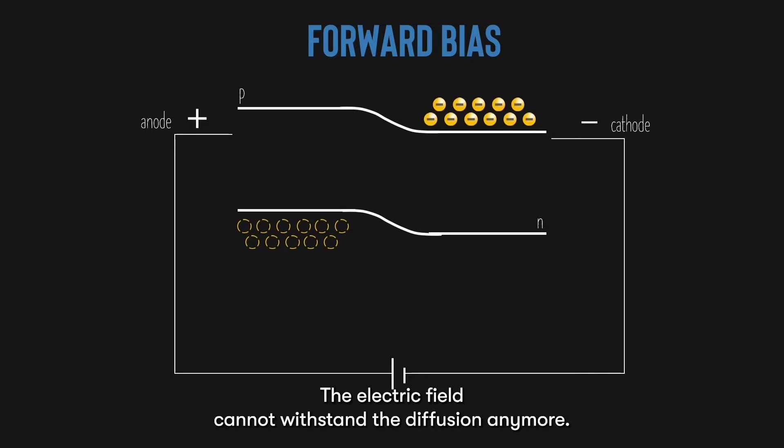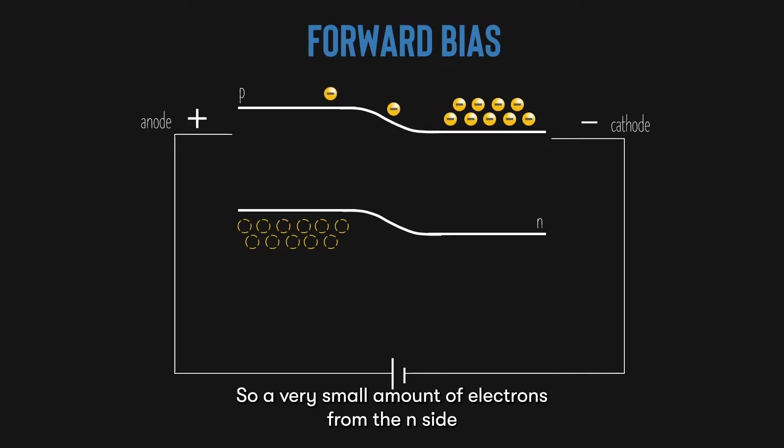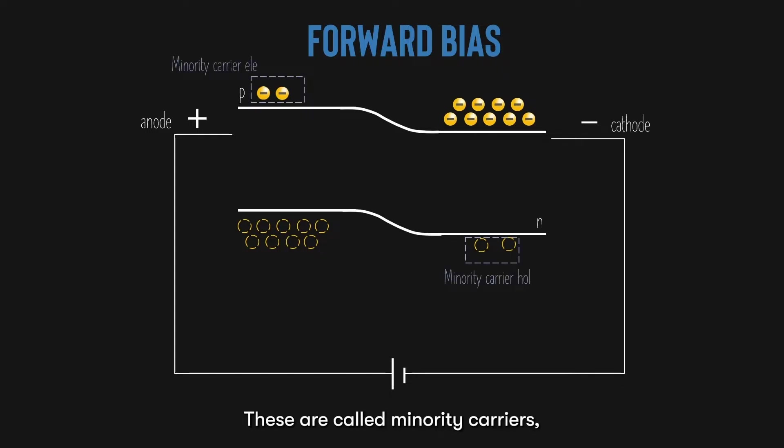The electric field cannot withstand the diffusion anymore. So, a very small amount of electrons from the N side conduction band will diffuse to the P side conduction band. In addition, a tiny amount of holes from the P side valence band will diffuse to the N side valence band. These are called minority carriers, simply because they exist in minority compared to the majority carriers.